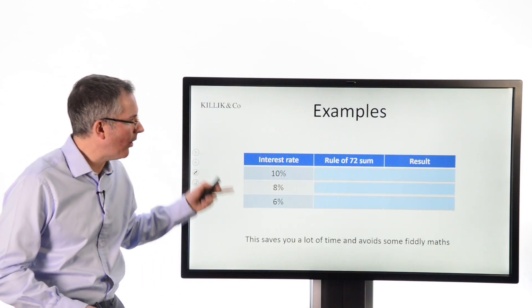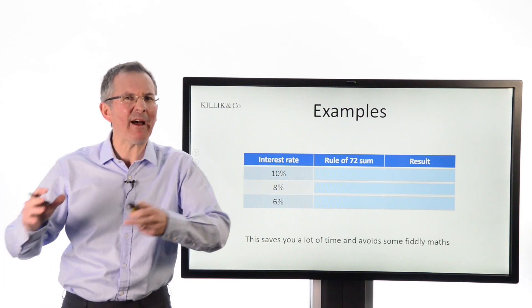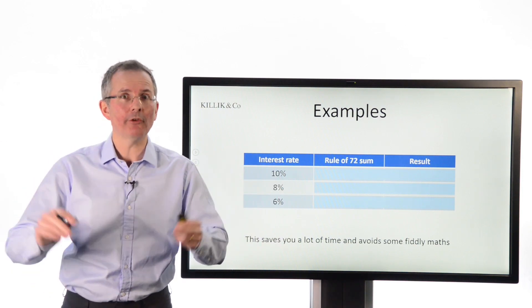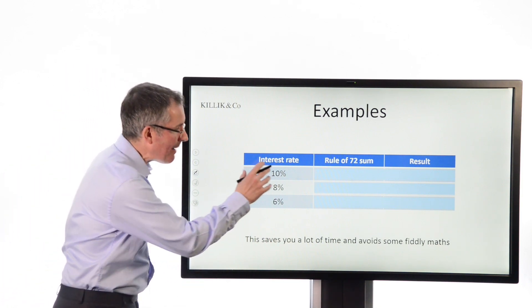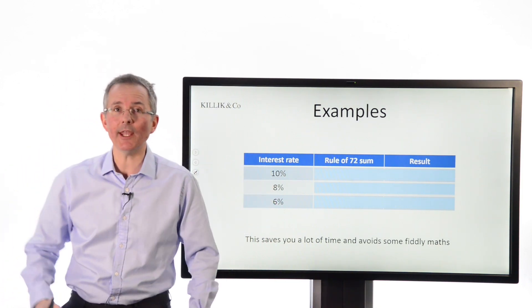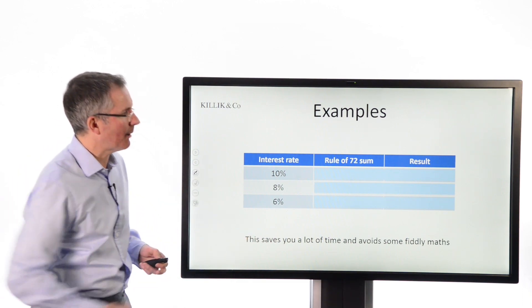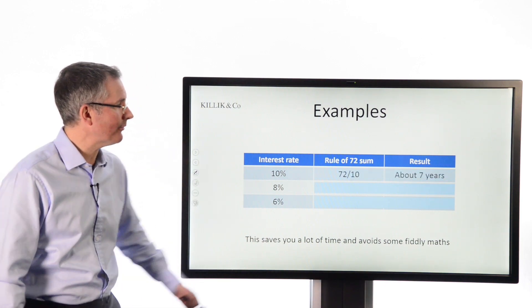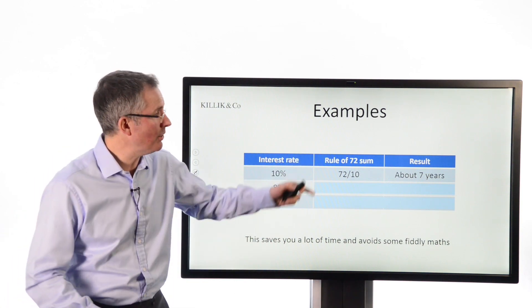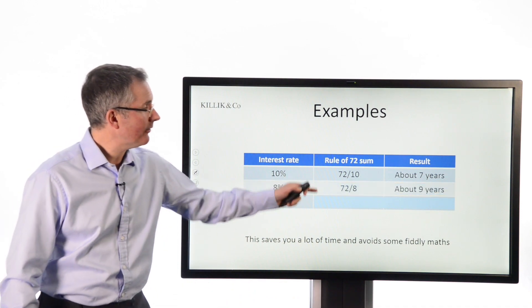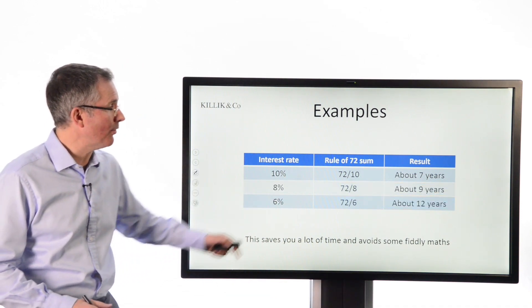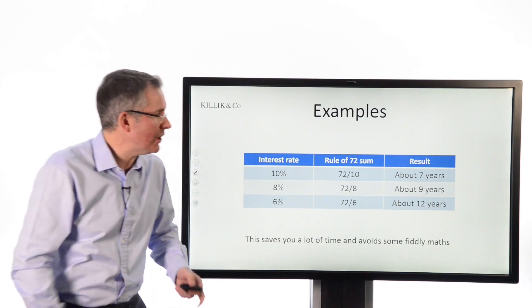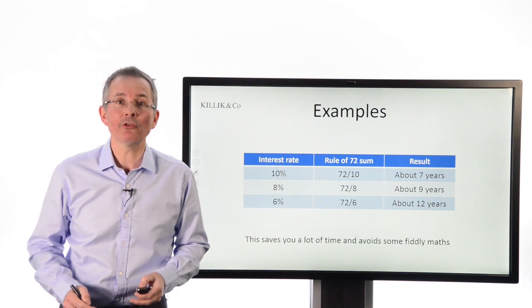It works really well in a certain range of interest rates in terms of accuracy. Between about 5% and about 12% is a really handy rule of thumb. Let's look at three rates where it's going to work quite well: 10%, 8%, 6%. These are not guaranteed, just as illustrations. Now, how long will it take me to double my money? The rule of 72 just says, divide 72 by that number, and you get about seven years. At 8%, 72 divided by 8 is around nine years. This is to double your money, remember. 72 divided by 6, this is the power of compounding, earning 6% on 6% on 6% each year, and it would take about 12 years to double the original sum.